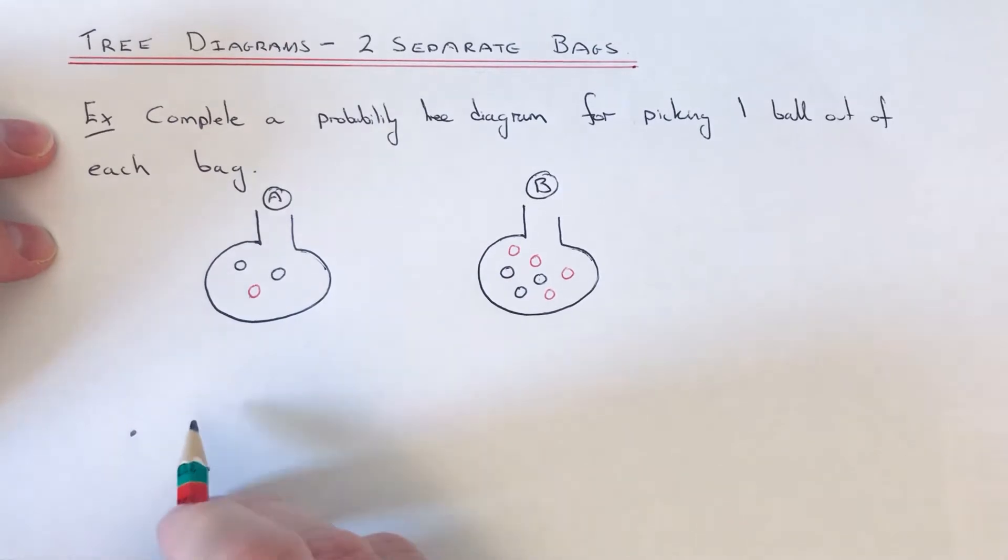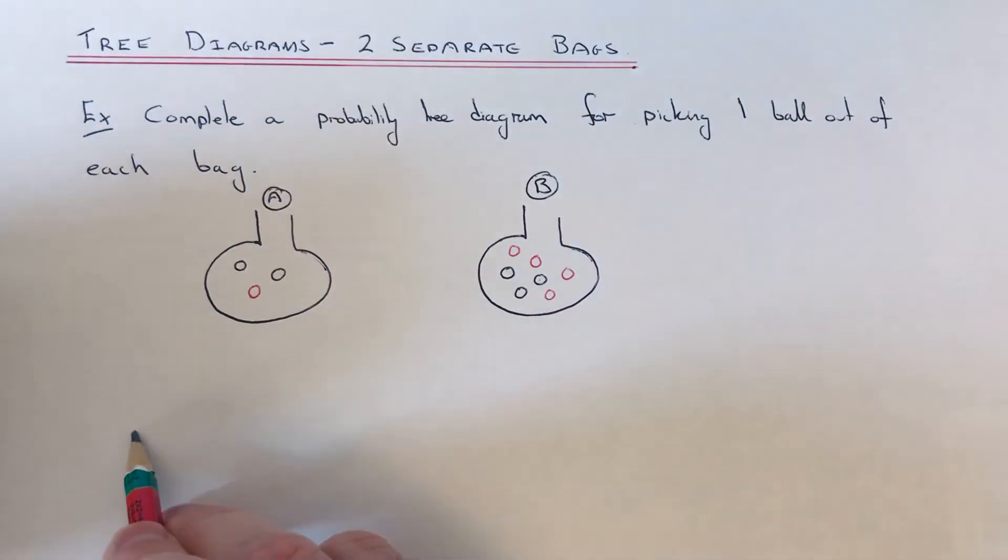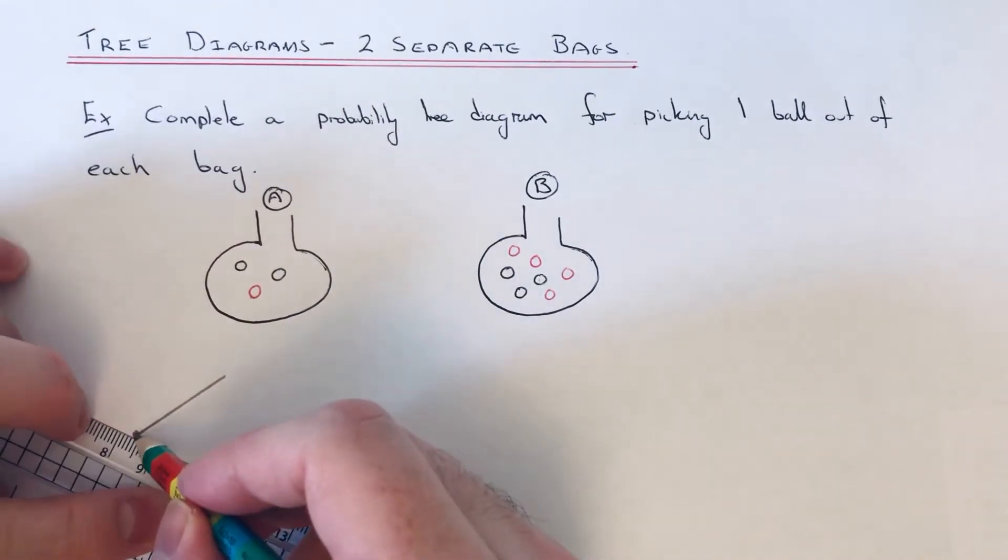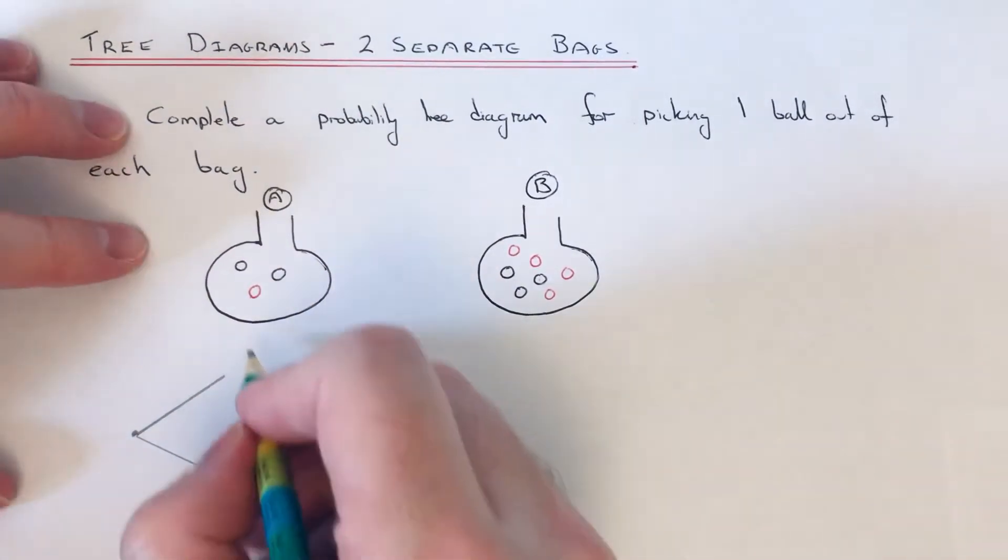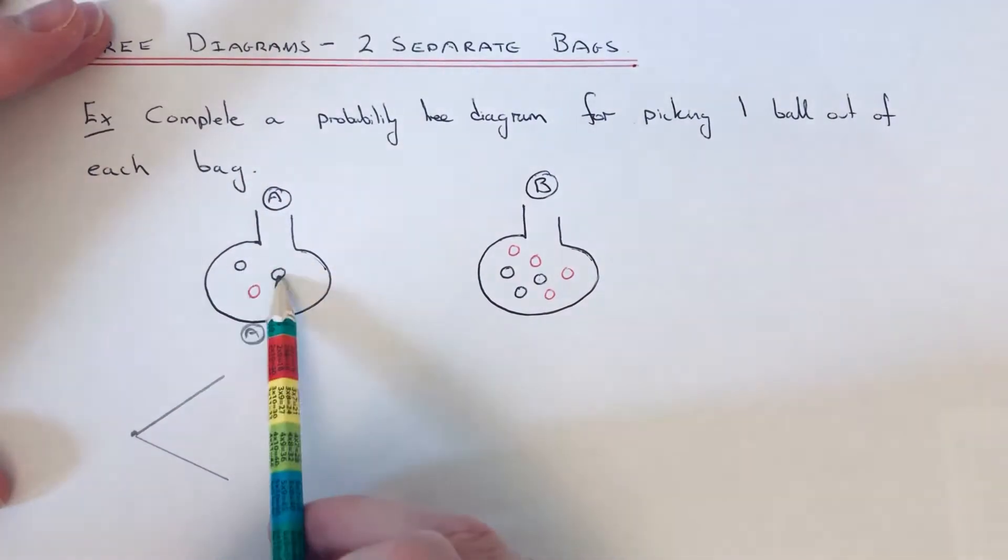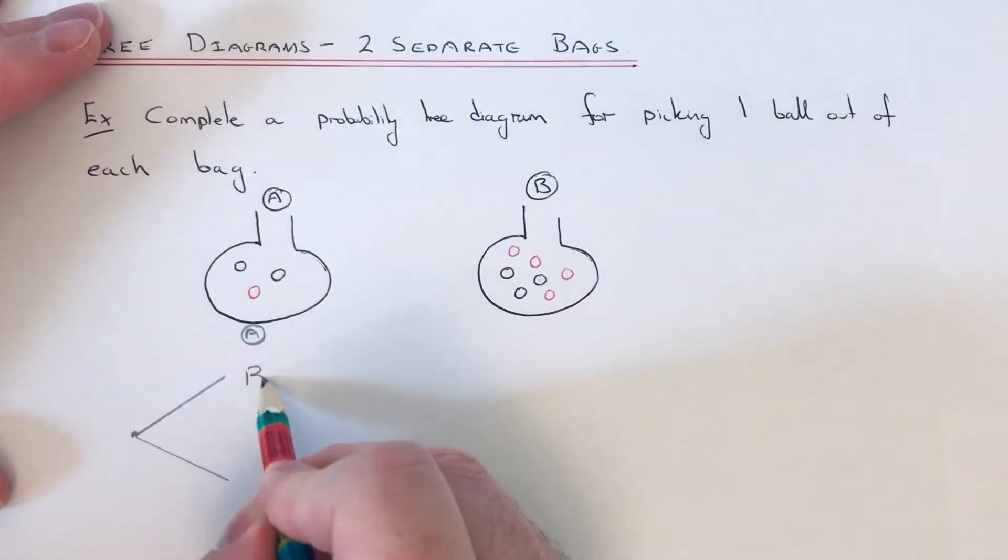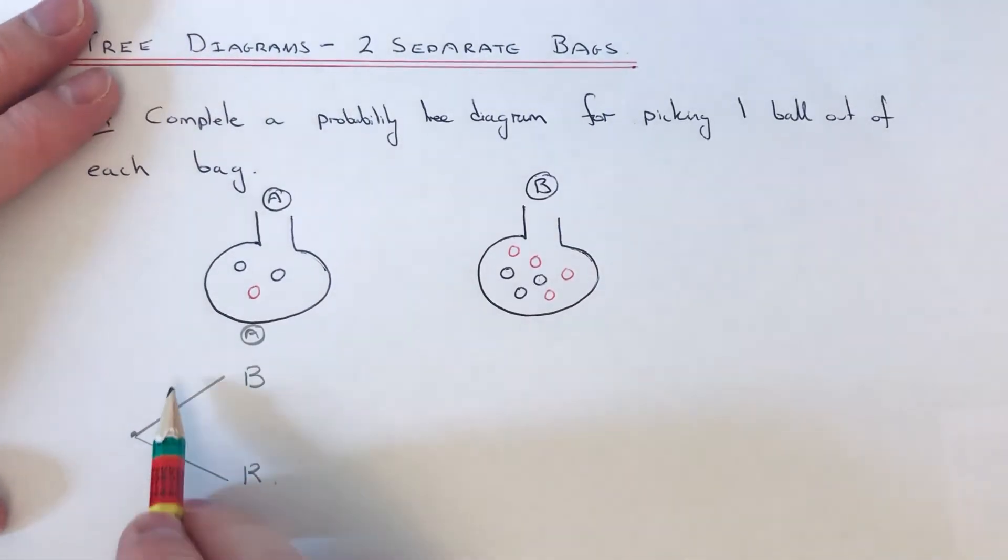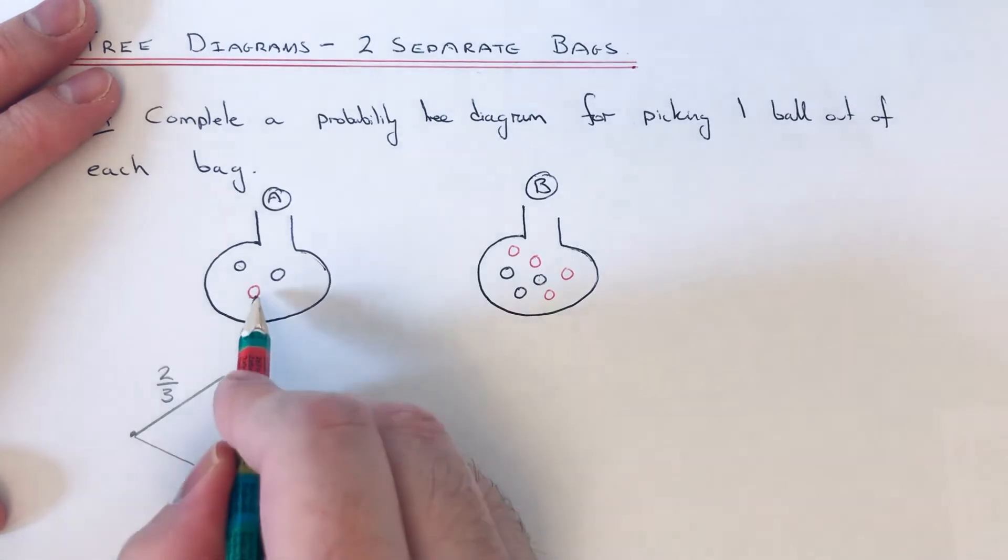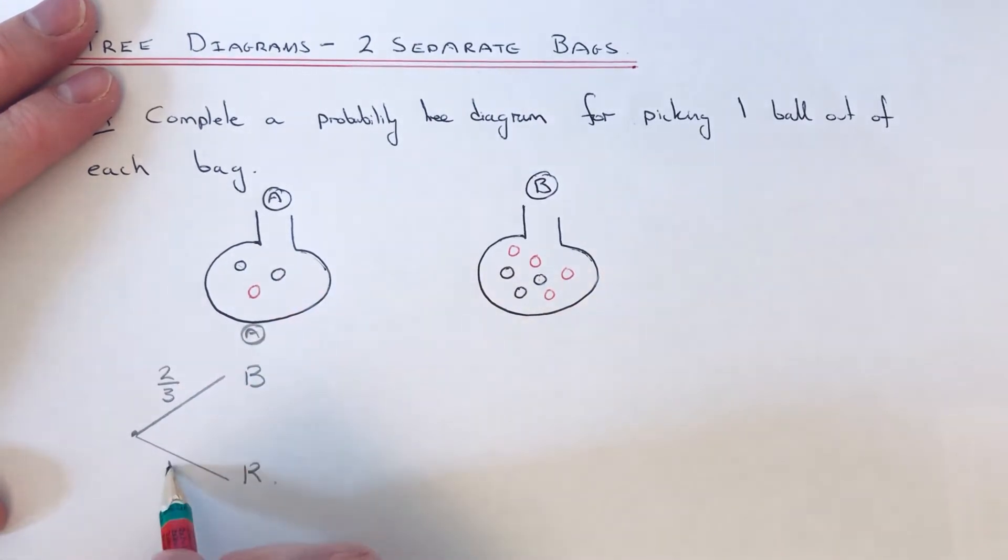So if we start somewhere on the left hand side of your page, the first two branches are for bag A. The balls that I can pick from bag A are black and red, and you put the probabilities as a fraction on the branches. So the probability of getting a black ball would be two out of the total which is three, and the red ball we've just got one out of the three balls.